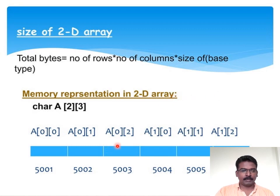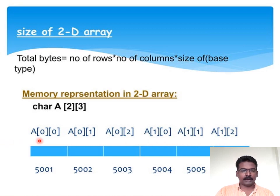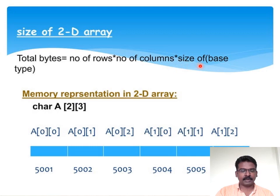Coming to the memory representation of the two-dimensional array: here they have declared an array named 'eaa' with two dimensions — two rows and three columns — with character data type. The indexing format is: eaa[0][0] for 0th row and 0th column, eaa[0][1] for 0th row and 1st column, and so on. The total bytes occupied by a two-dimensional array can be calculated using the formula: number of rows × number of columns × size of the data type.